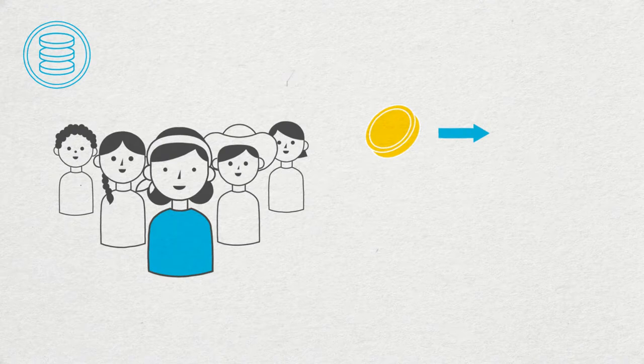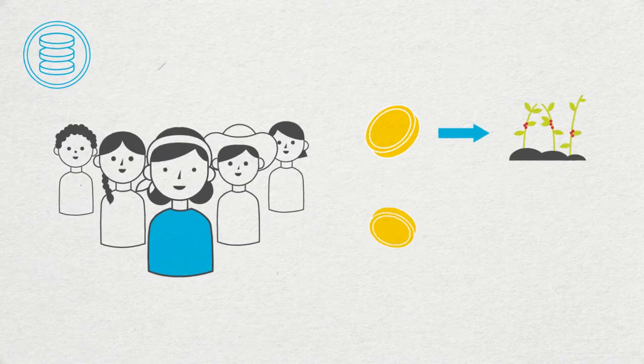This could mean that Rosa gets training in how to look after her coffee trees, or she and her fellow members may decide to buy equipment to roast and package their own coffee, expanding their market potential and increasing their revenue.